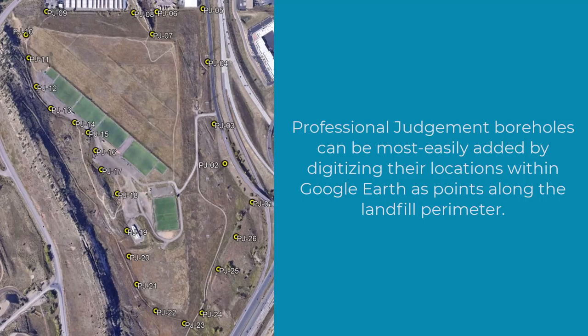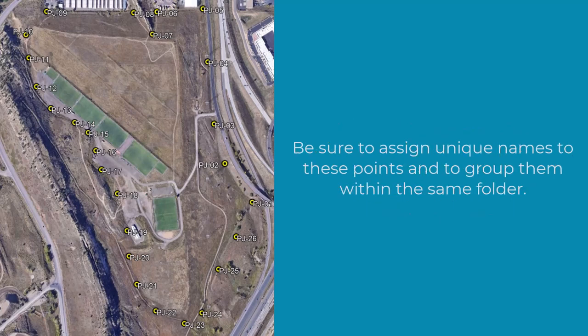Next, we'll need to create professional judgment or imaginary boreholes around the perimeter of the landfill. These PJ boreholes will force stratigraphic units within the subsequent modeling to converge and pinch out at the edges of the landfill. Professional judgment boreholes can be most easily added by digitizing their locations within Google Earth as points along the landfill perimeter.